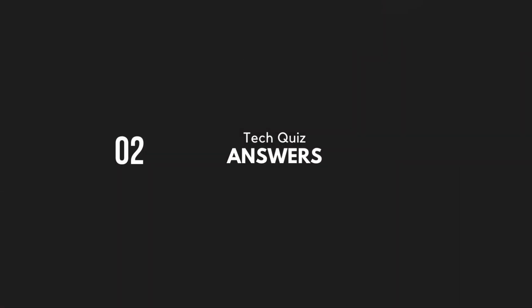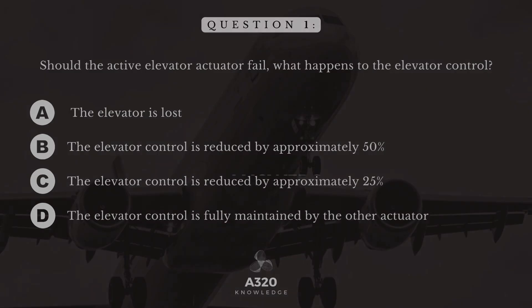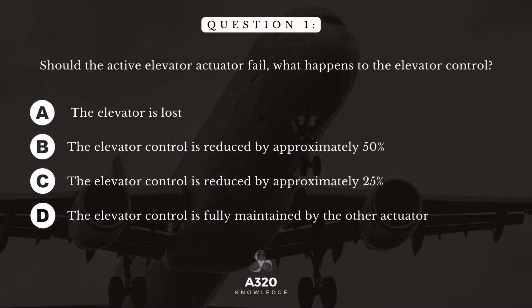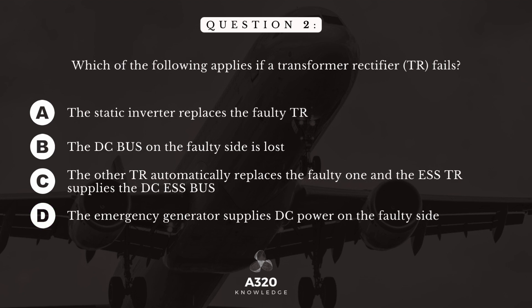Let's move on to the answers. Question 1. Should the active elevator actuator fail, what happens to the elevator control? The answer is: the elevator control is fully maintained by the other actuator. Question 2. Which of the following applies if a transformer rectifier fails? The answer is: the other transformer rectifier automatically replaces the faulty one and the essential TR supplies the DC essential bus.